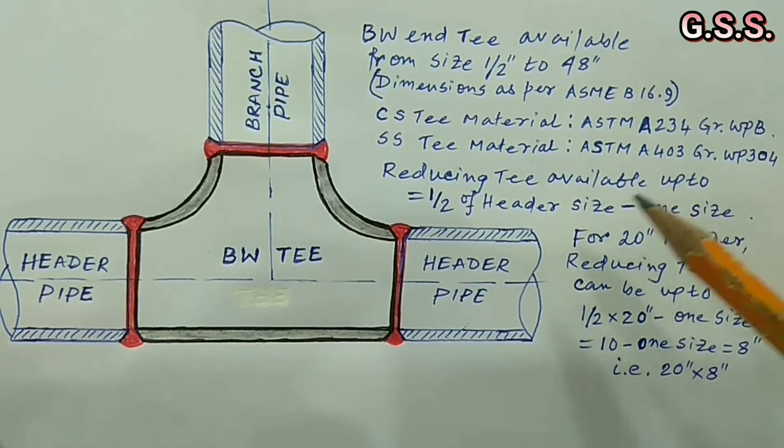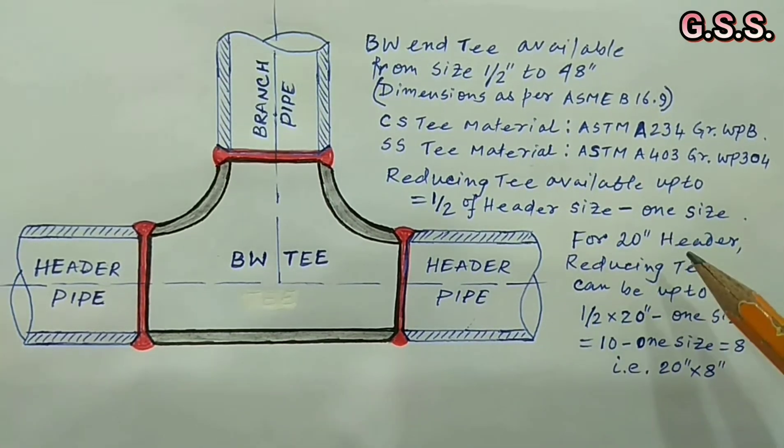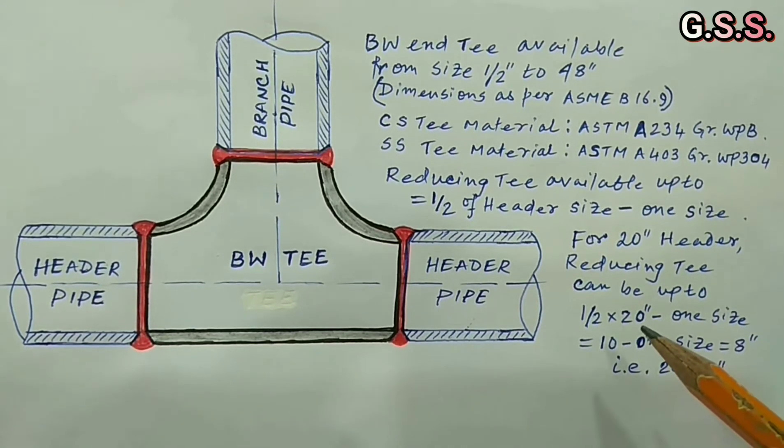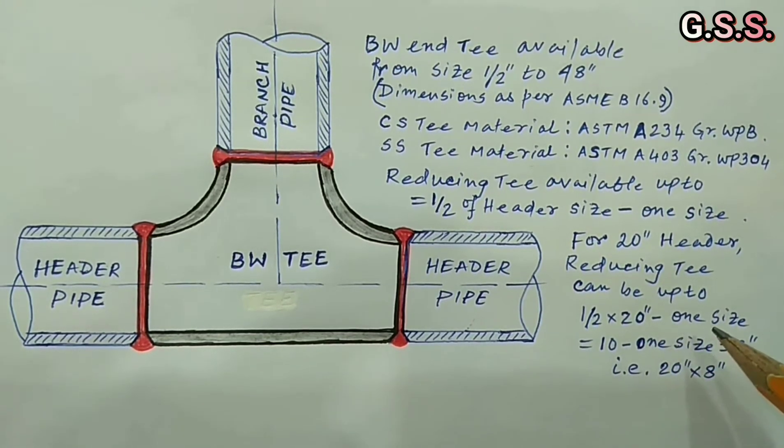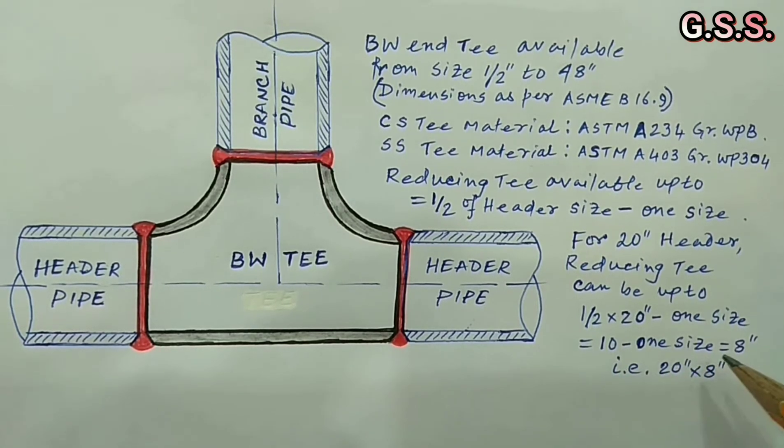Reducing Ts are available up to size half of header size less one size. That means for 20 inch header size, reducing T is possible up to 20 inch by 8 inch size. That means half of 20 inch less one size, that means 10 inch minus one size, that means 8 inch.